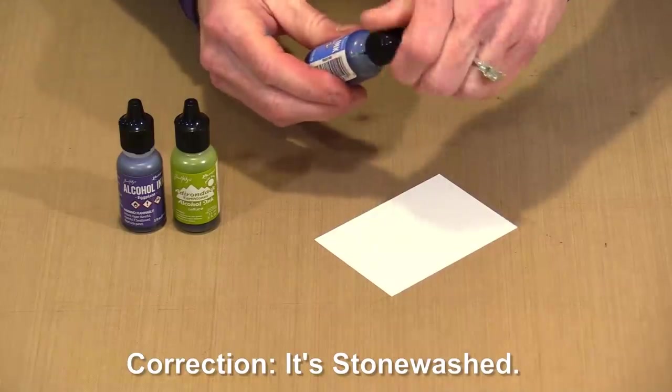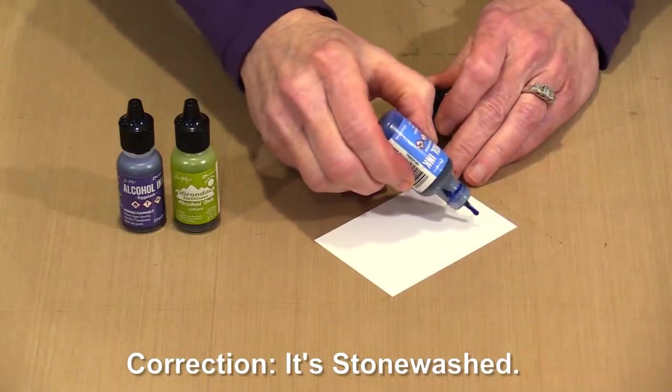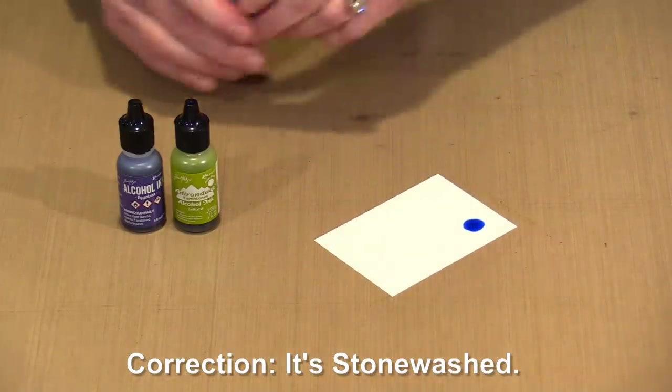So I have sailboat blue, lettuce, and eggplant. And all of them are going to bloom with a different color aura.